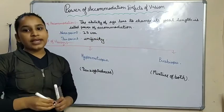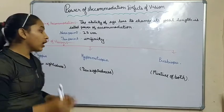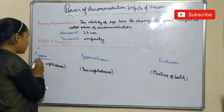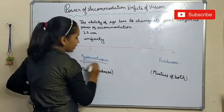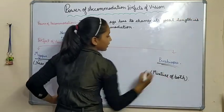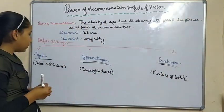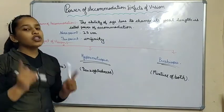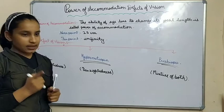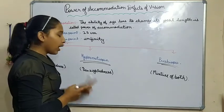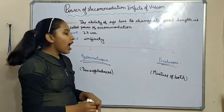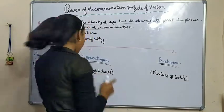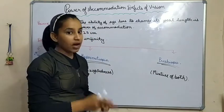Now we will see defects of vision. There are three types of defects of vision. First is myopia, second is hypermetropia, and third is presbyopia. Myopia is also called nearsightedness, hypermetropia is called farsightedness, and presbyopia is a mixture of both myopia and hypermetropia. I will explain all of these one by one.